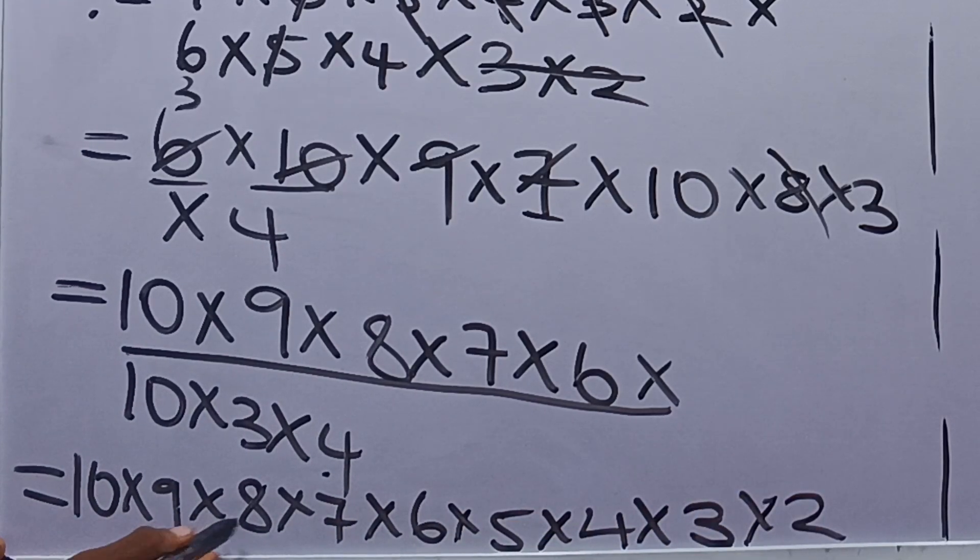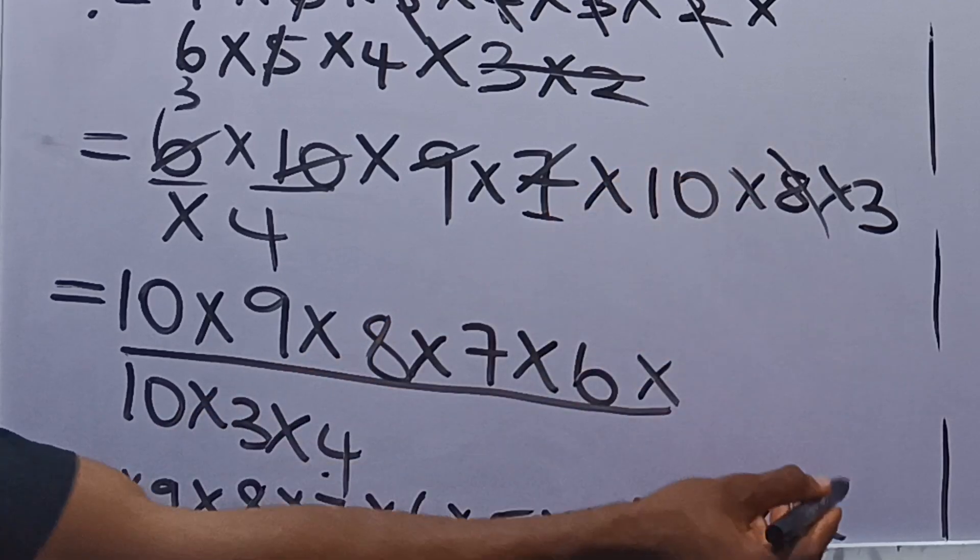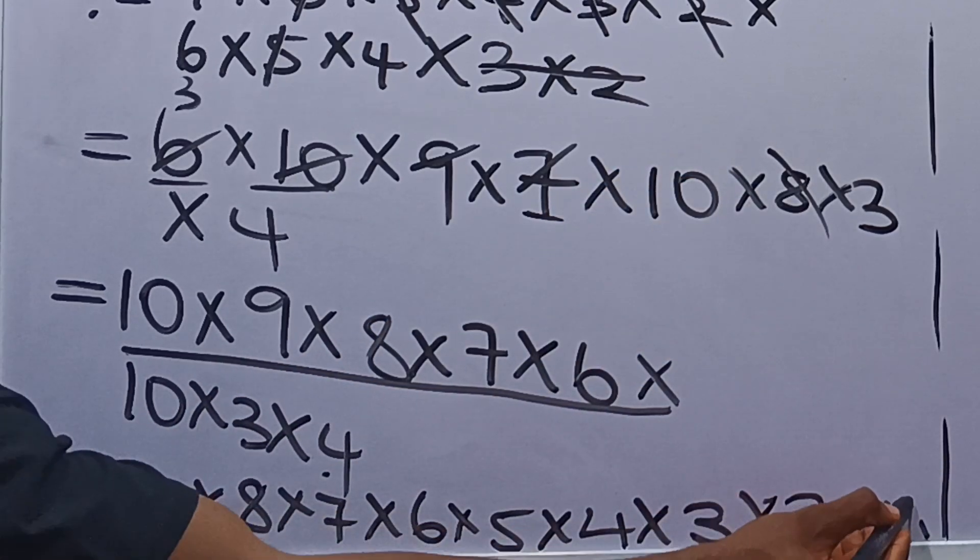So you see we have 10, 9, 8, 7, 6, 5, 4, 3, 2. And we can just add 1. So if we add 1 here, this tells us that our x factorial now will become equal to 10 factorial.